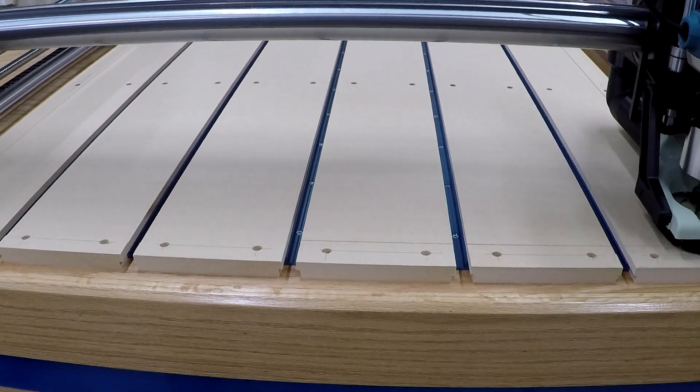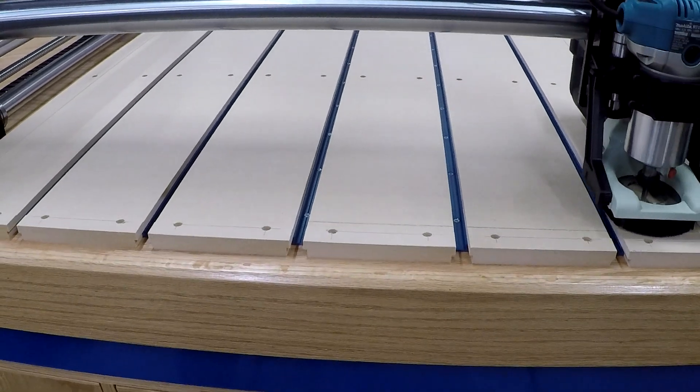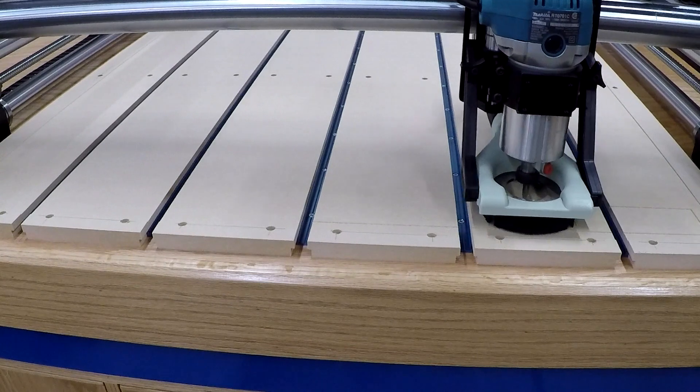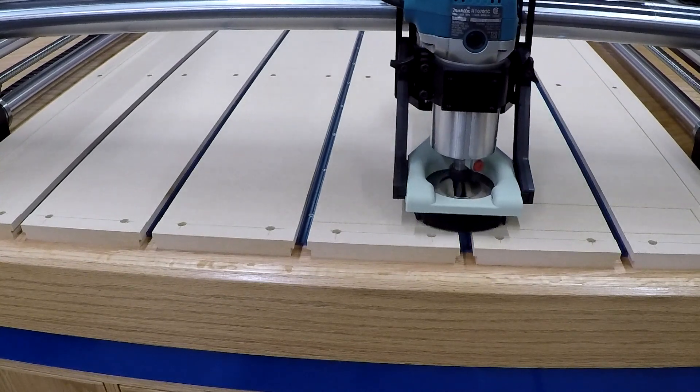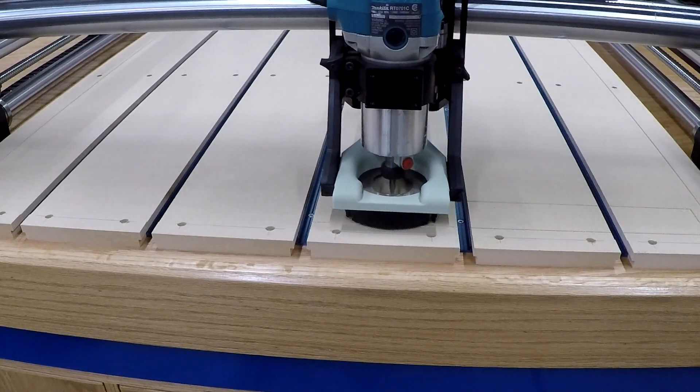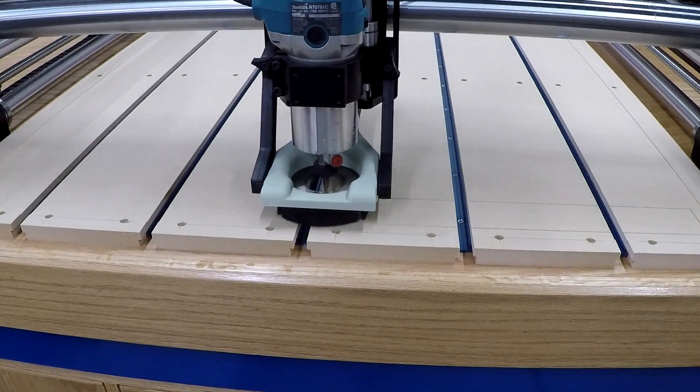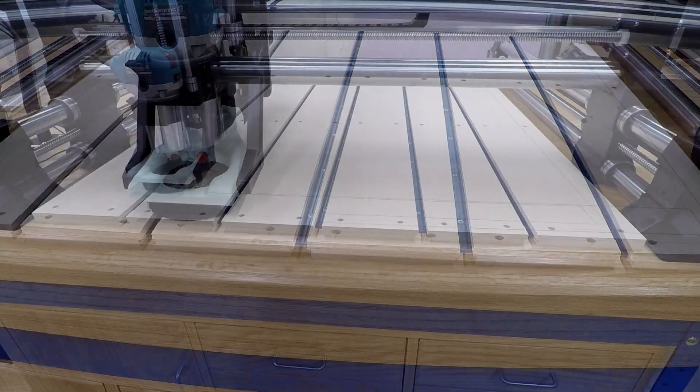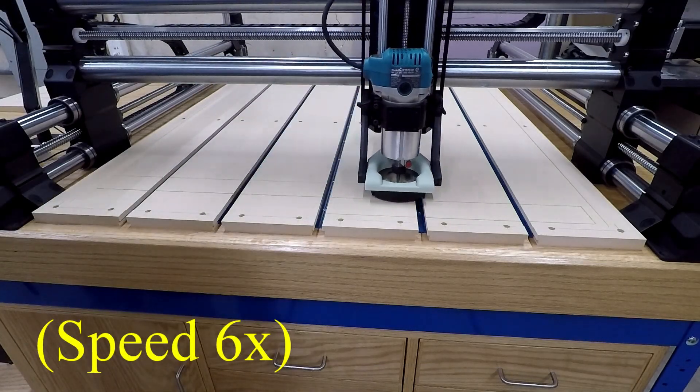In this clip I'm showing that I'm cutting a grid of two inch squares all over the spoil board. I had previously done a test to see how thin of a line I could cut and have it be visible without interfering with anything.